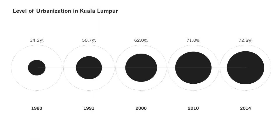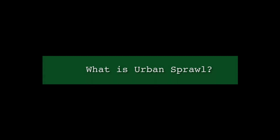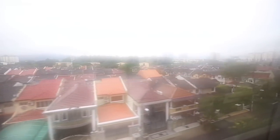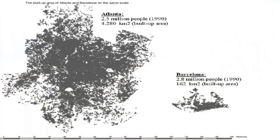During that time, the population approximately doubled, but the area increased by two and a half times. Urban sprawl is characterized by an inefficient use of land resources. For example, building low-density housing and commercial buildings will lead to the horizontal expansion or sprawl of the city.